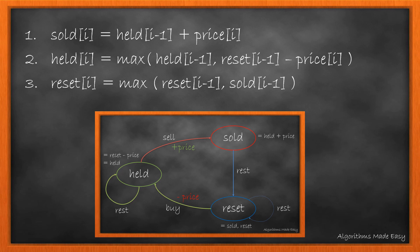When we write this down we get three equations. The new value of sold state is addition of previous held state and the current price. The new held state is maximum of previous held state and previous reset state minus price. Lastly, the new reset state is maximum of previous reset and previous sold state.